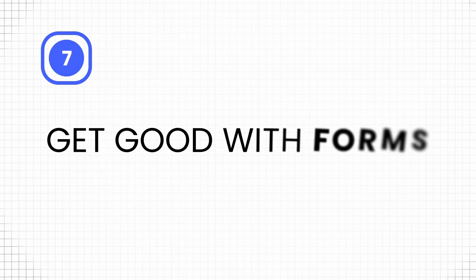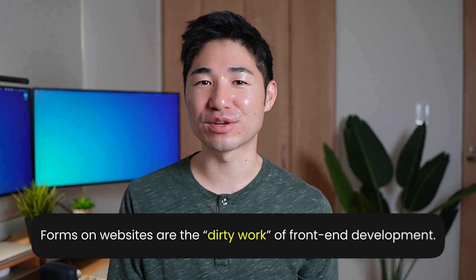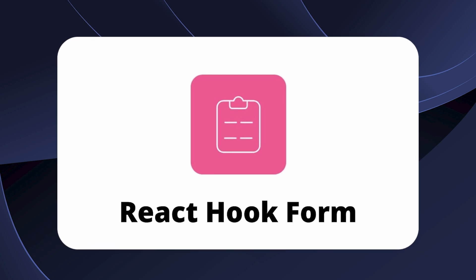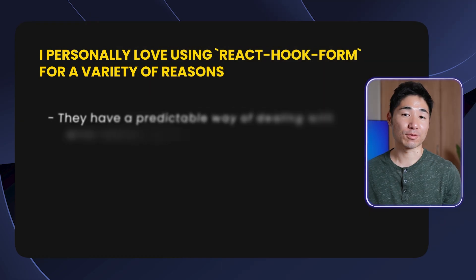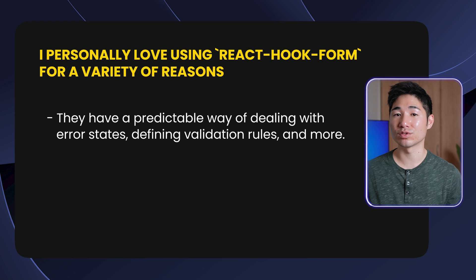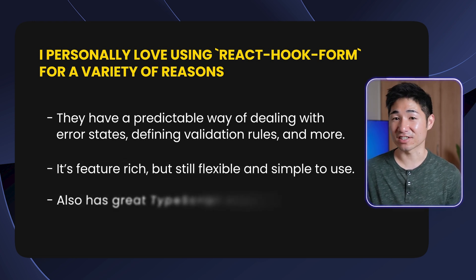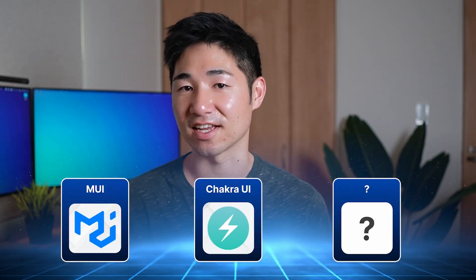Point number seven is to get good with forms. Forms are the dirty work of front-end development — they're everywhere in apps and pretty much every front-end developer will touch them. I personally love React Hook Form for its predictable way of dealing with error states, defining validation rules, and more. It's feature-rich but still flexible and simple to use, has great TypeScript support, and works with controlled and uncontrolled components, integrating well with any UI component library like MUI or Chakra UI.